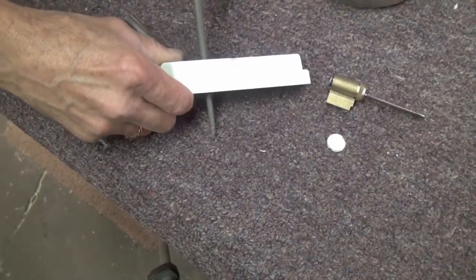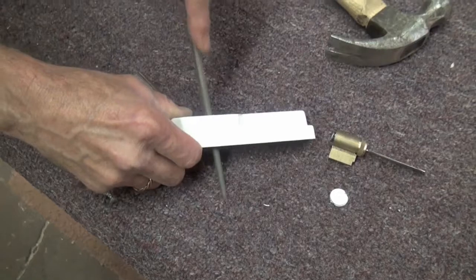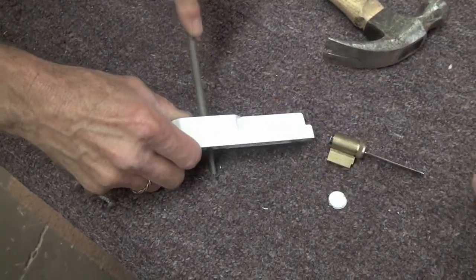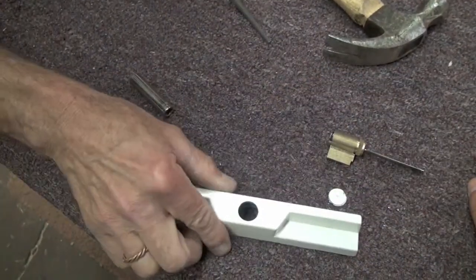Once the cutout is out, use a file if you need to smooth down the rough edges of the hole. Now you can insert your keyed cylinder.